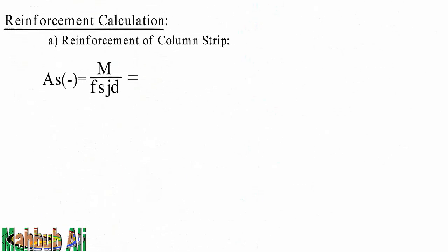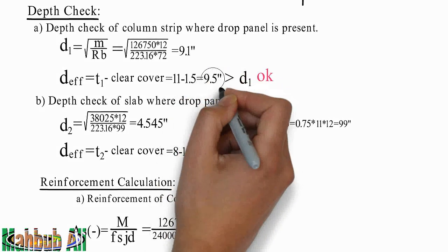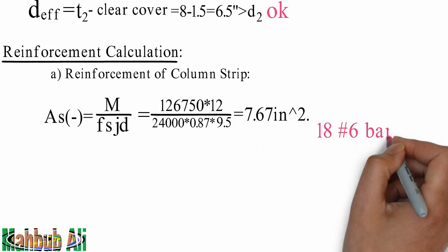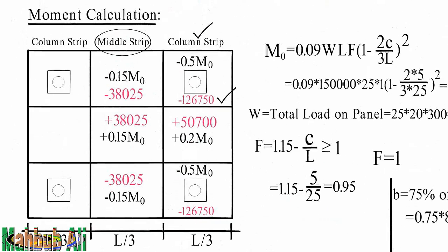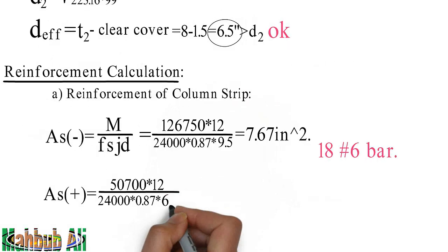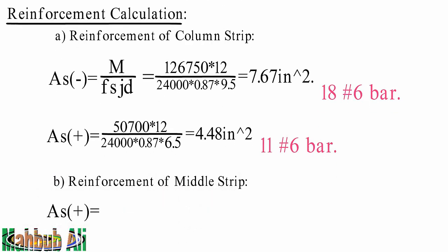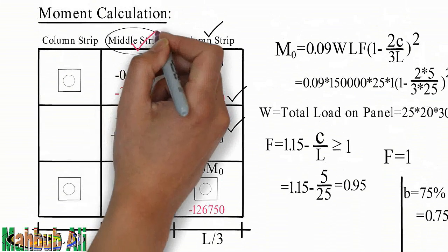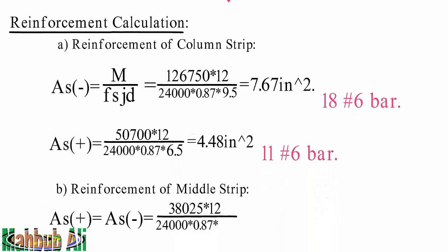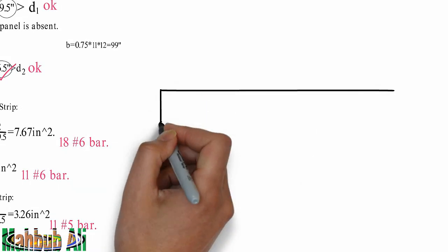Negative moment calculation — number bar nilam. As positive, positive moment. d effective. Number bar nilam. Reinforcement of middle strip: As positive equal As negative, positive negative moment. d effective — 3.5 inch is greater than d1, 3.2 inch square, 1.5 inch square — yagata pass. Number bar nilam. Column strip reinforcement provide.